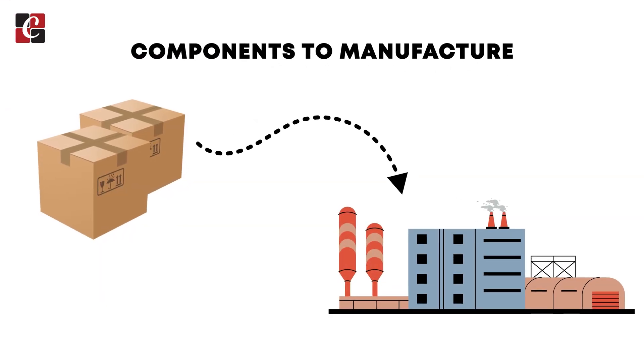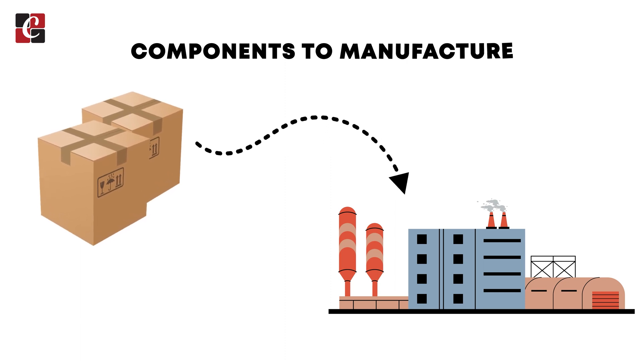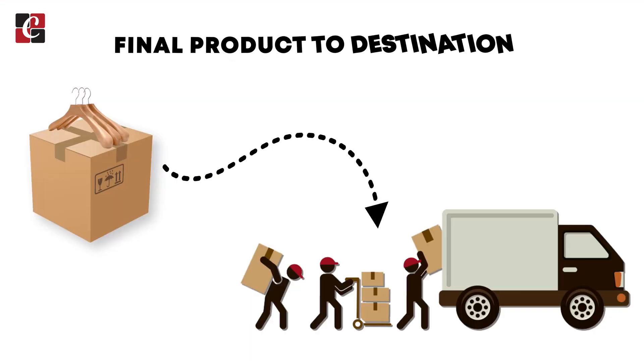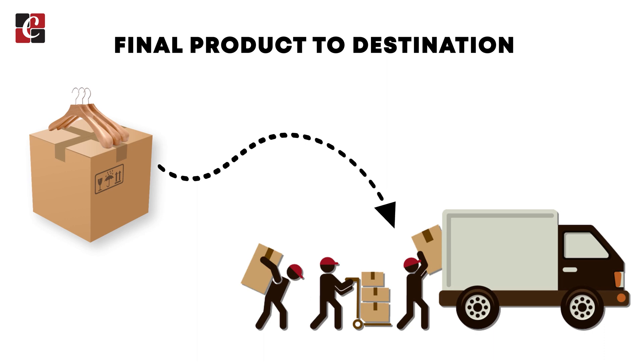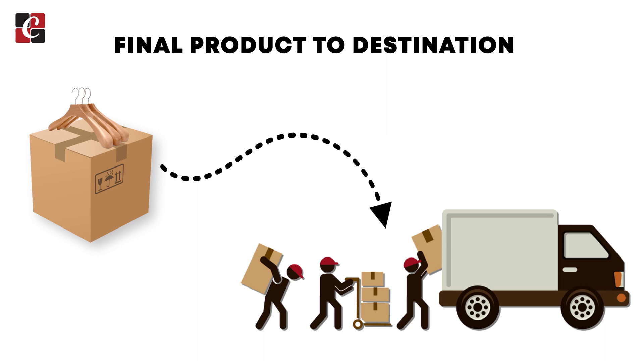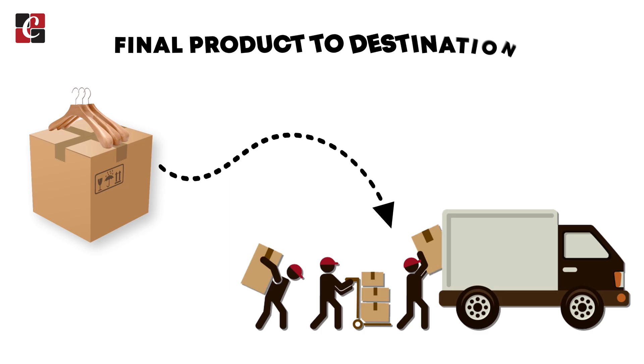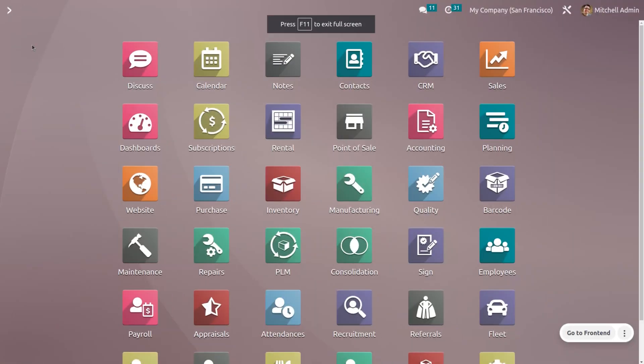We have to pick the components, and then the picked components will move to the manufacturing area. Once production is over, the final products will move to the destination location. It is simple to manufacture a product using two steps. Let's see how to manage that in Odoo's manufacturing module.